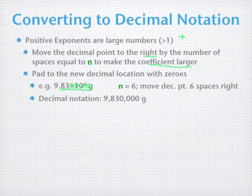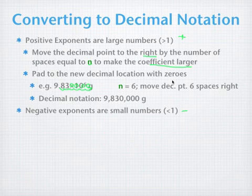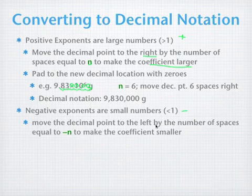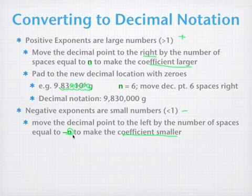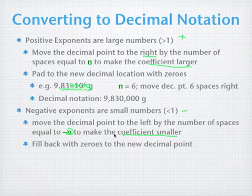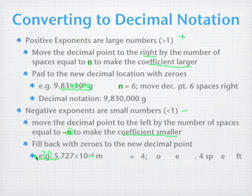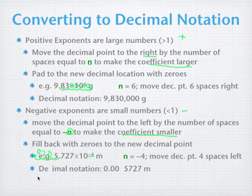With negative exponents, it works the same way except we go the opposite direction. Negative exponents are small. Move the decimal point to the left, because we want to make the coefficient smaller, moving it by that same number n of spots. You'll most likely have to fill back with zeros to the new decimal point. So for 5.727 times 10 to the minus 4 meters, n equals negative 4, so we move 1, 2, 3, 4 spots to the left, fill in with three zeros, and get 0.0005727 meters.